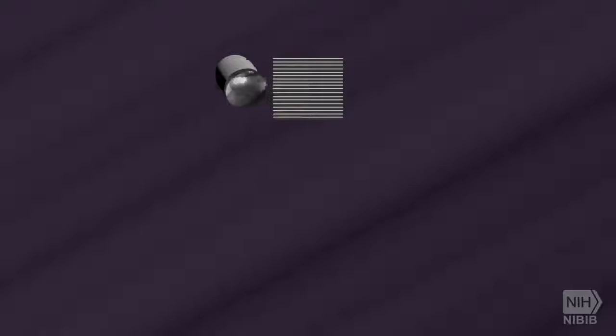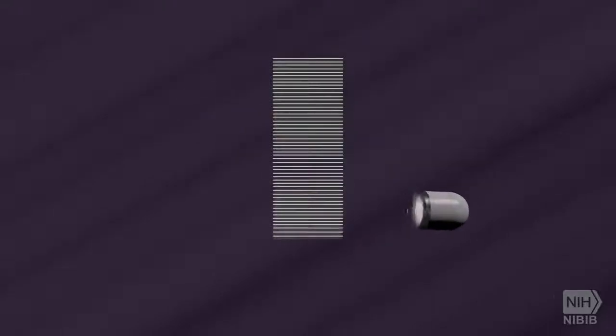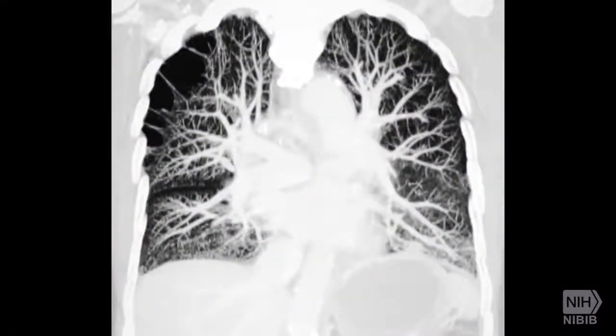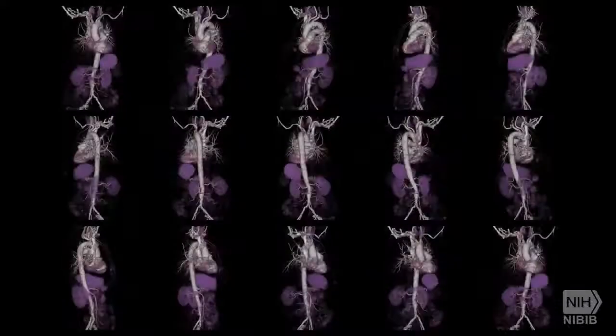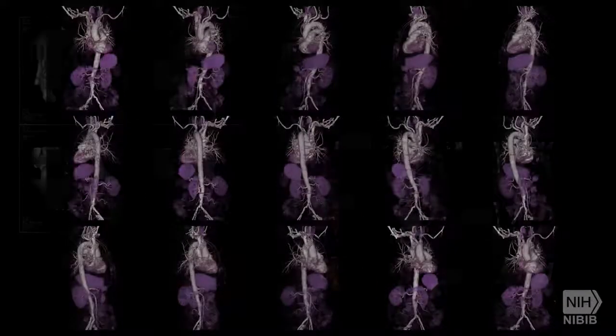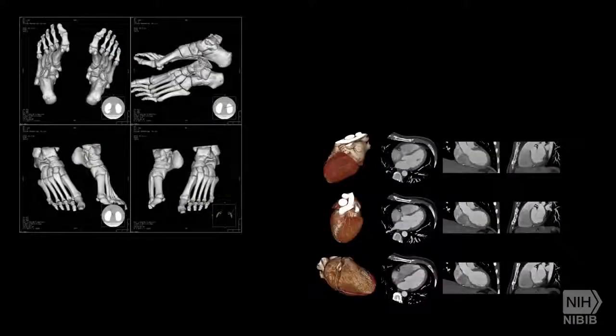A CT scan is an x-ray procedure that creates cross-sectional images with the help of computer processing. CT images are more detailed than conventional x-ray images and can reveal bones as well as soft tissue and organs.